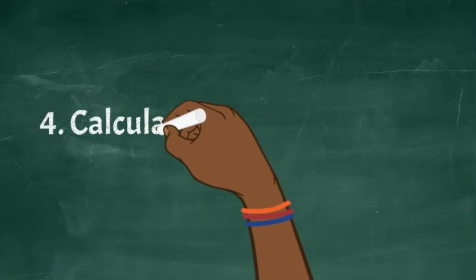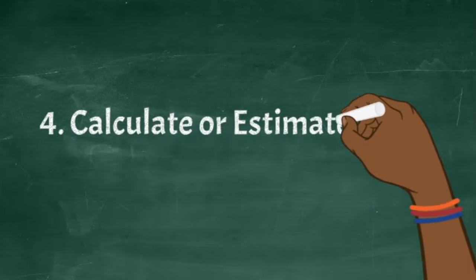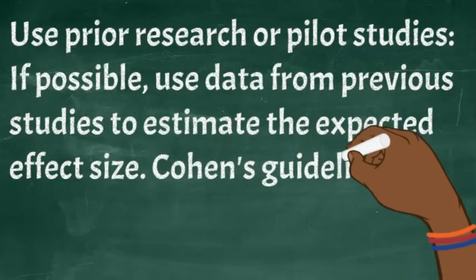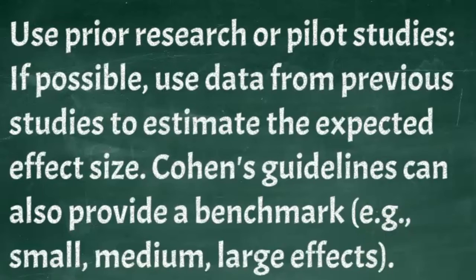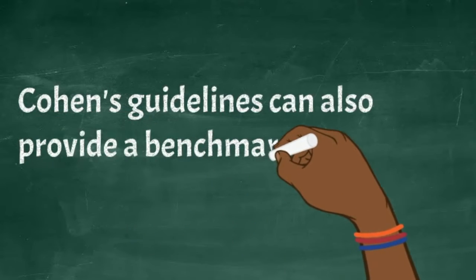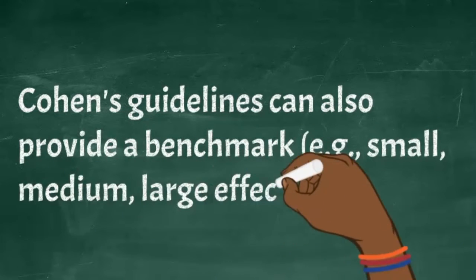The fourth step is to calculate or estimate the effect size. Use prior research or pilot studies. If possible, use data from previous studies to estimate the expected effect size. Cohen's guidelines can also provide a benchmark, e.g. small, medium, large effects.